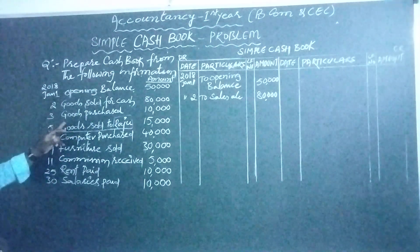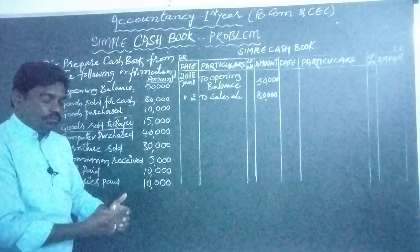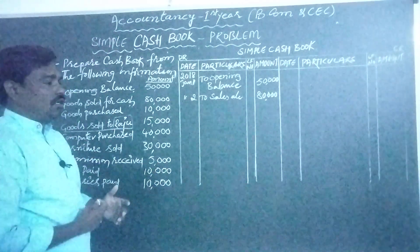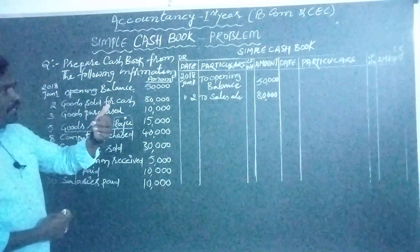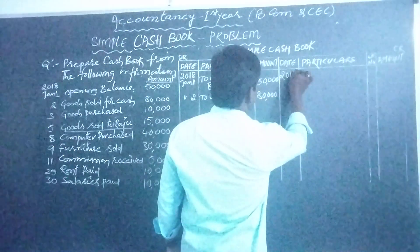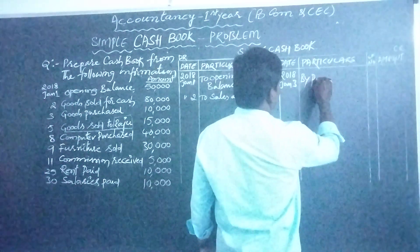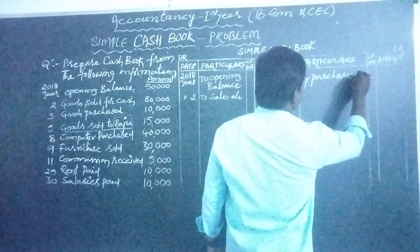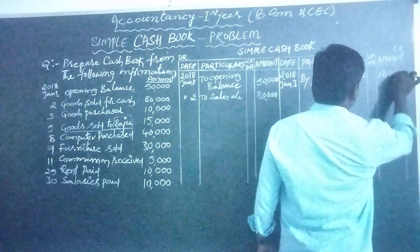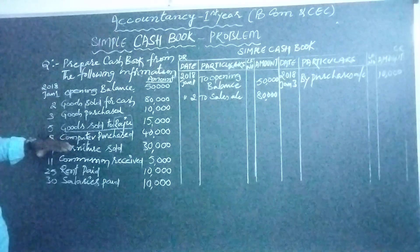Next, goods purchased for cash rupees 10,000. When we purchase goods we pay cash, so cash is going out of the business — we record it on the credit side. January 3rd — 'purchase account' — rupees 10,000.